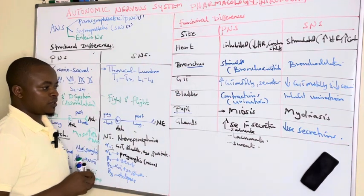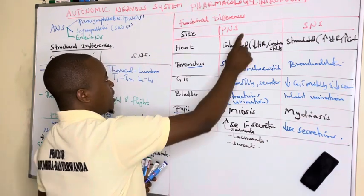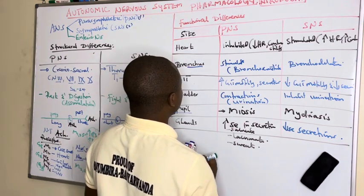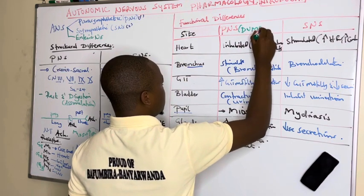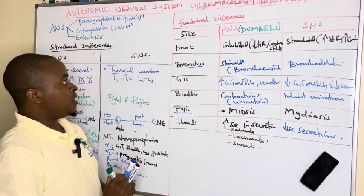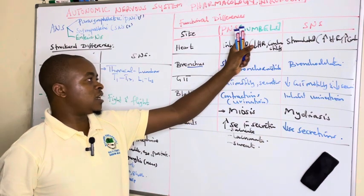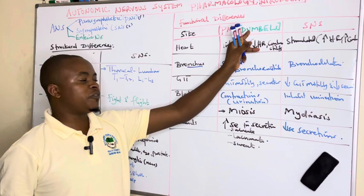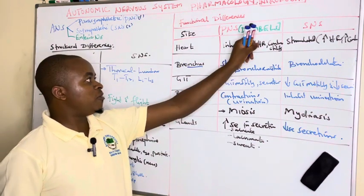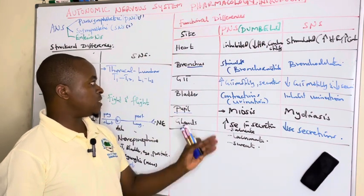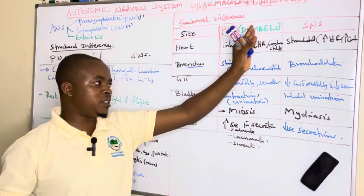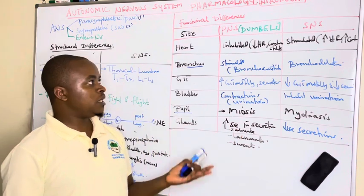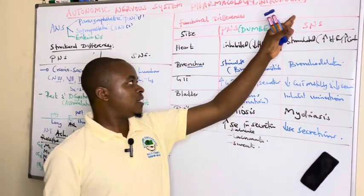The mnemonic for parasympathetic nervous system effects is DUMBELS: D for diarrhea or defecation, U for urination, M for miosis (at the eye), B for bronchoconstriction (lungs), E for emesis (vomiting, due to increased GIT motility), L for lacrimation, and S for salivation — all indicating increased secretions and activity.